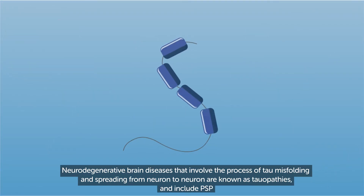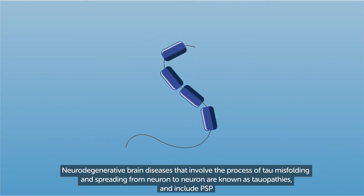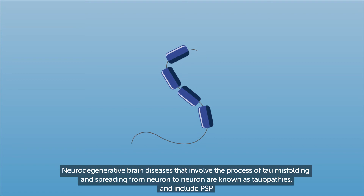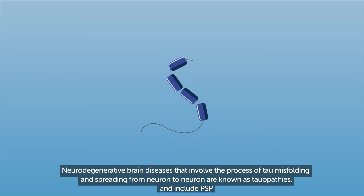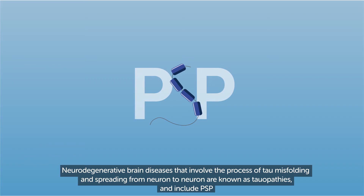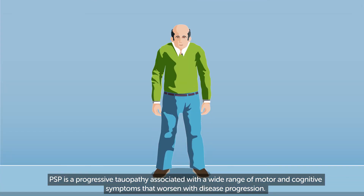Neurodegenerative brain diseases that involve the process of tau misfolding and spreading from neuron to neuron are known as tauopathies, and include PSP. PSP is a progressive tauopathy associated with a wide range of motor and cognitive symptoms that worsen with disease progression.